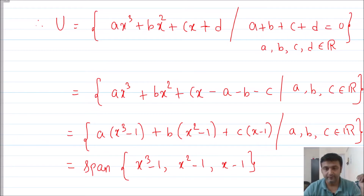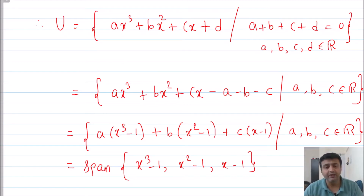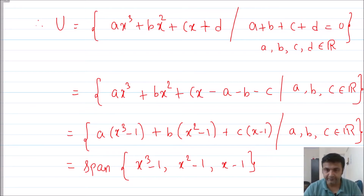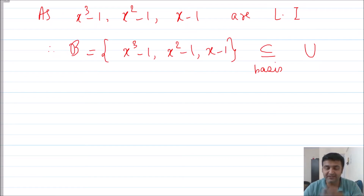You can observe that U is the span of three polynomials: (x³ − 1), (x² − 1), and (x − 1). Since x³, x², and x are linearly independent, subtracting constants preserves linear independence, so these three polynomials are also linearly independent. You can verify this by setting c₁(x³−1) + c₂(x²−1) + c₃(x−1) = 0 and comparing coefficients, which forces c₁ = c₂ = c₃ = 0.